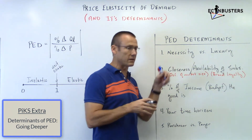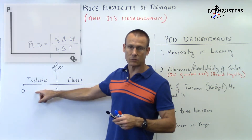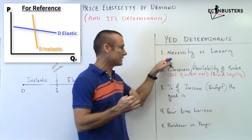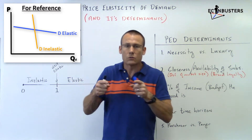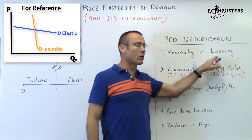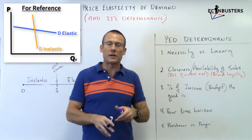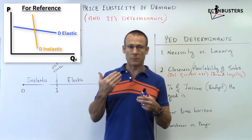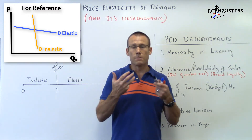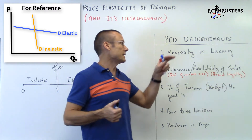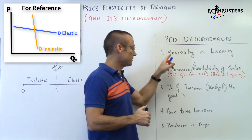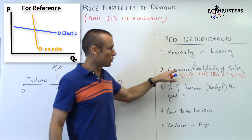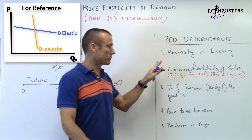Now, the determinants of PED. First: necessity versus luxury. The more a good is a necessity, the more inelastic demand will be. It's a need — we're not going to be very responsive to price changes. The more it's a luxury, the more responsive we will be — the more elastic. For example, a pharmaceutical drug you must take to manage a condition, like insulin, is a necessity — inelastic. Luxury goods are over on the elastic side.